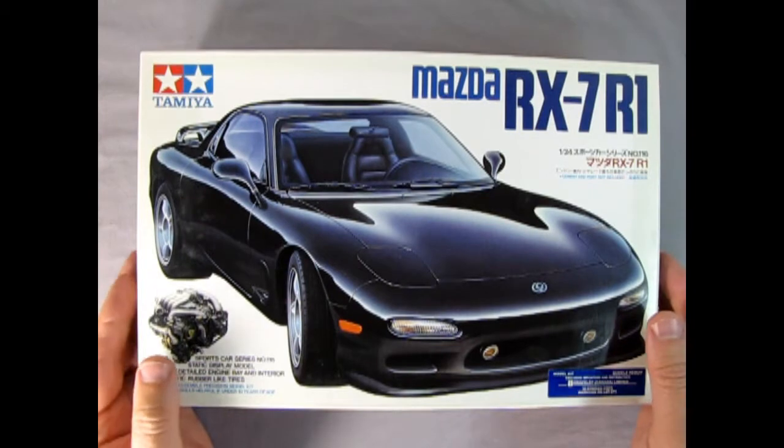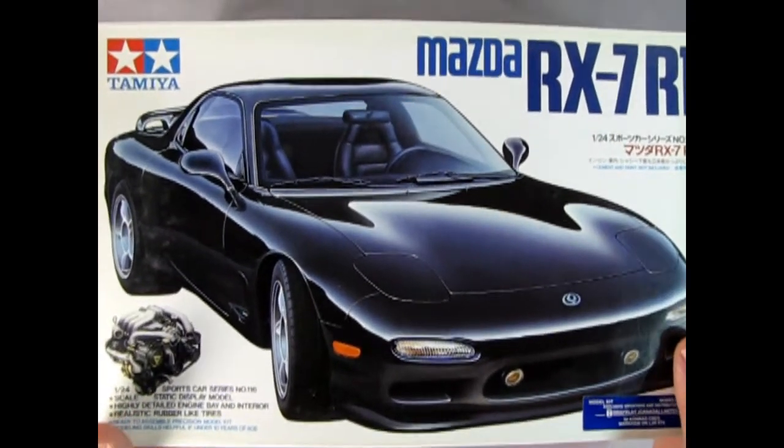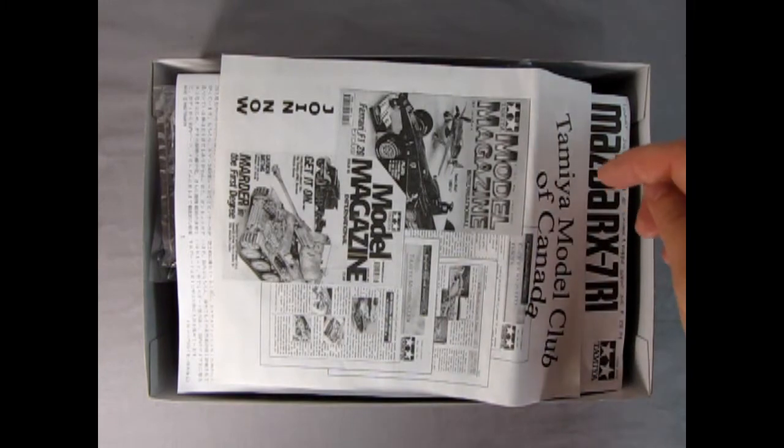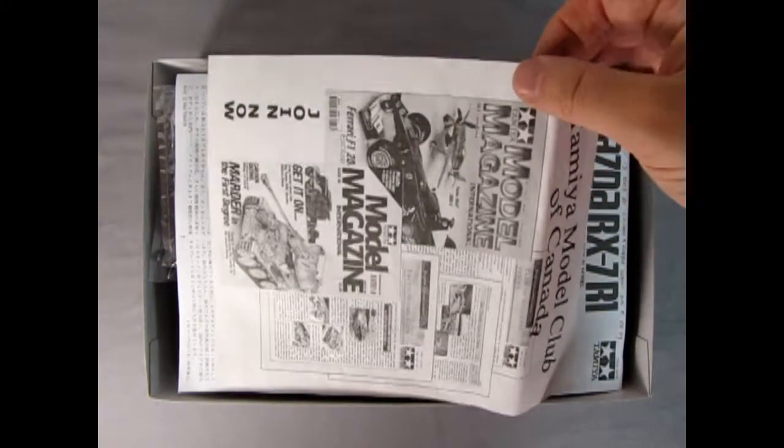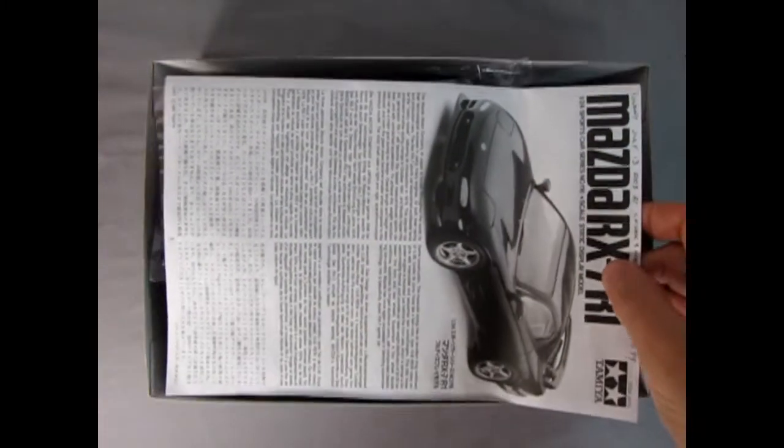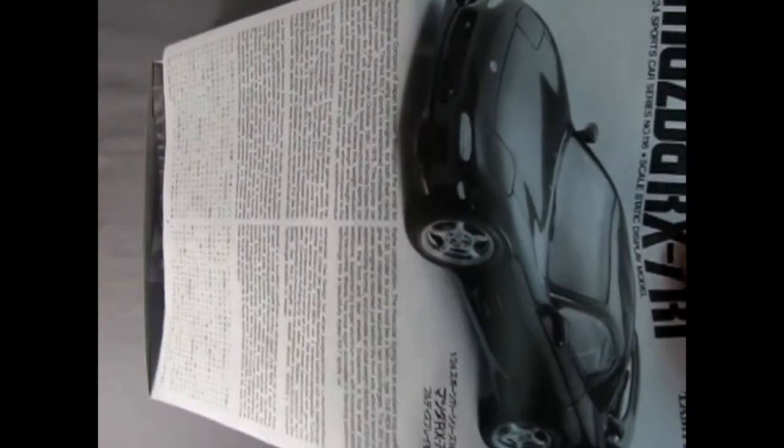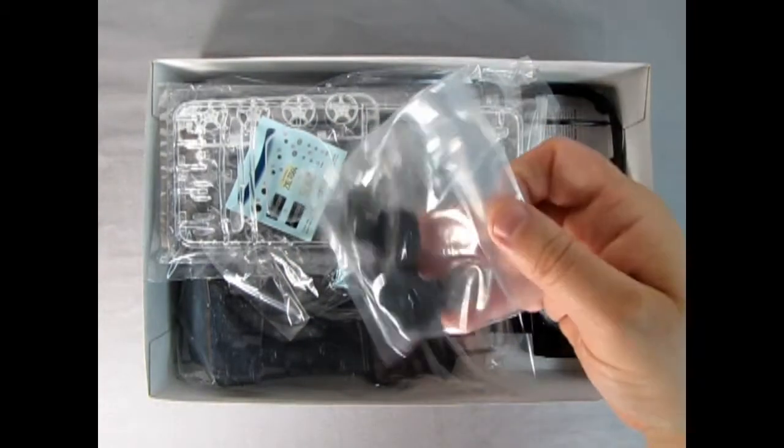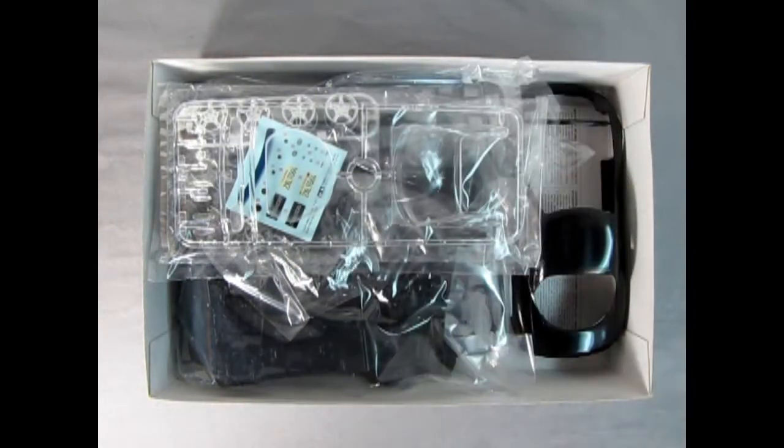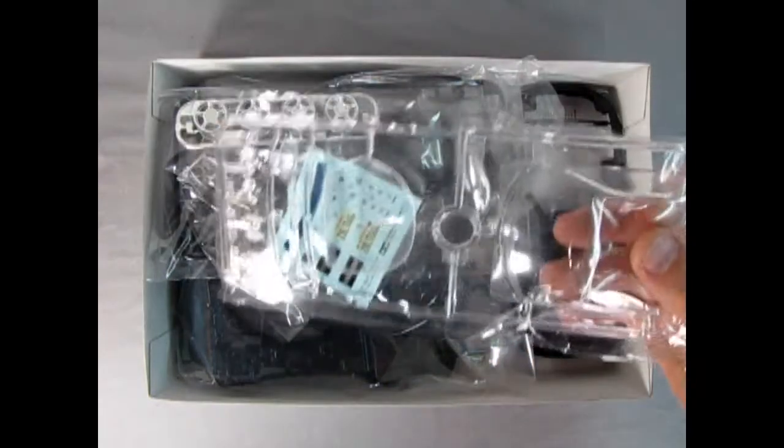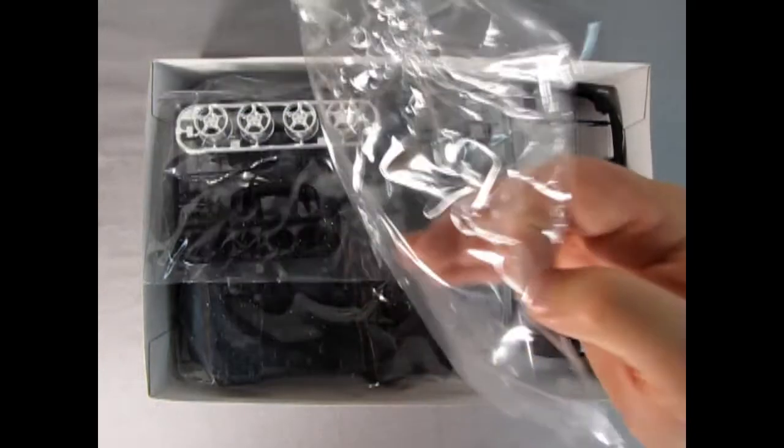So now let's take the lid off the box and see what's inside. Right away we get to see a wonderful offer for the Tamiya Club of Canada. This model kit's from 1992. And then we get our instruction sheet which Danny the dog will take a look at. There's a decal sheet inside there.